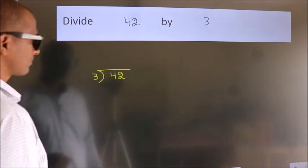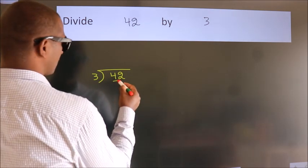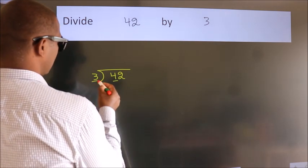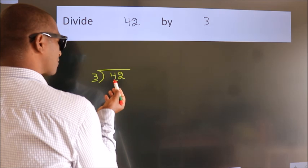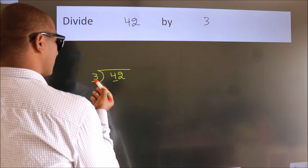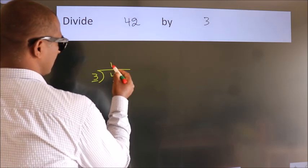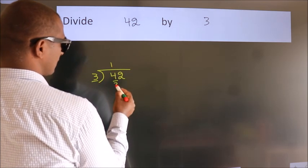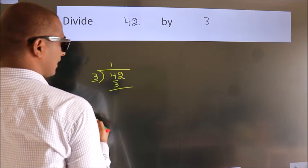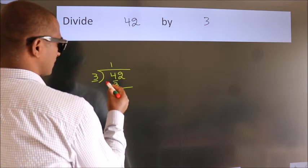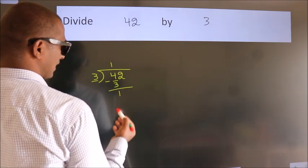Next, here we have 4, here 3. A number close to 4 in the 3 times table is 3 — 3 once is 3. Now we should subtract. We get 1.